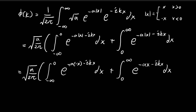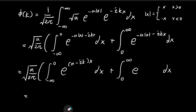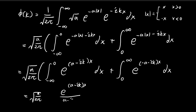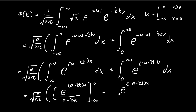Now we have two manageable integrals. Grouping terms in the exponents, the first integral has (a − ik)x and the second has (−a − ik)x. Integrating these exponential terms is straightforward: we retain the exponential and divide by the constant multiplying x. Evaluating the first from negative infinity to 0, and the second gives e to the power of (−a − ik)x divided by (−a − ik), evaluated from 0 to infinity.